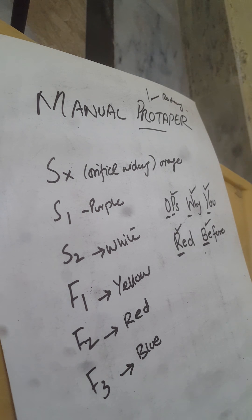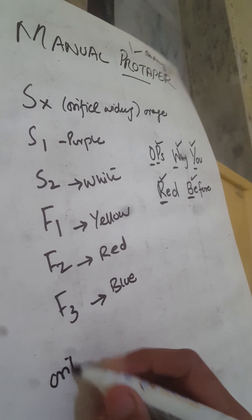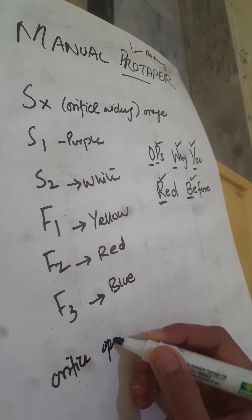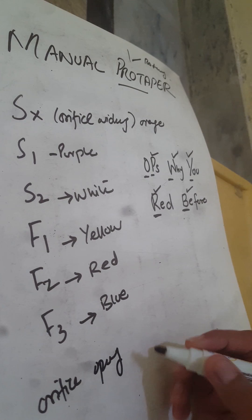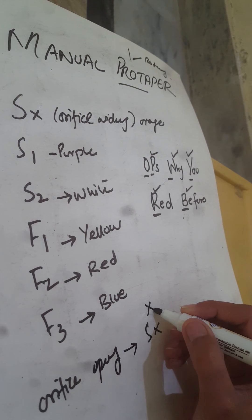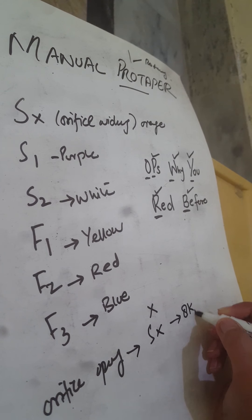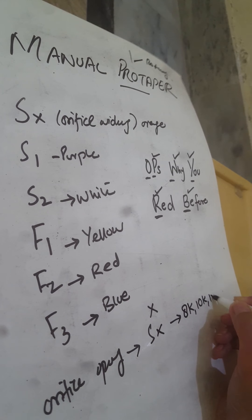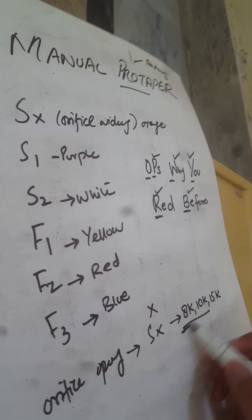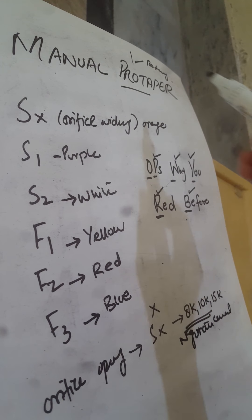Now in the procedure, first we have to do the orifice opening. After doing the orifice opening, we will not jump directly on the sx file. First we use the conventional files 8k, 10k, or 15k to negotiate the canals.